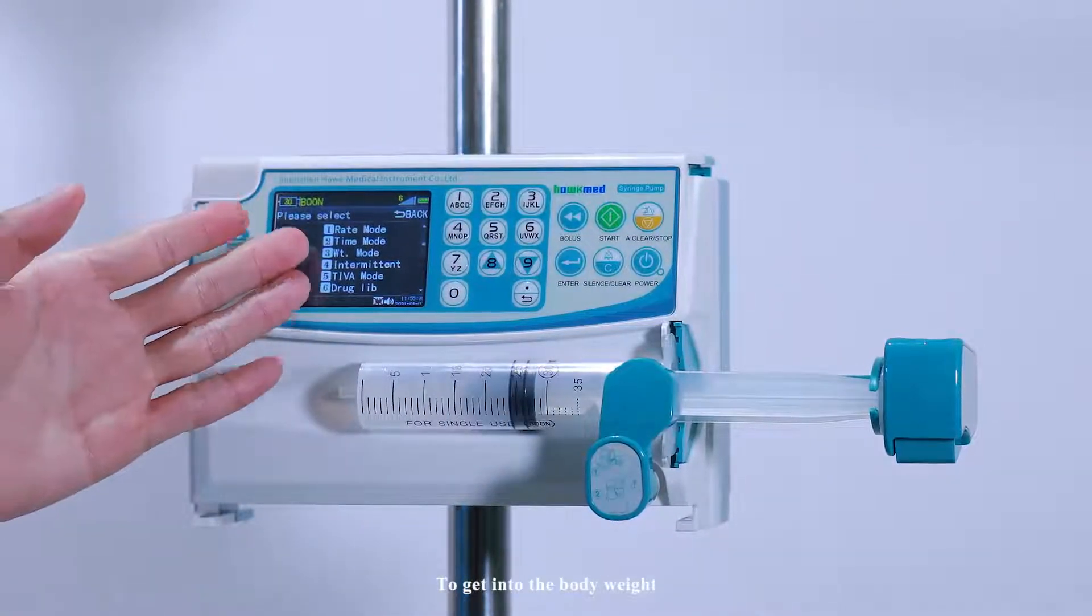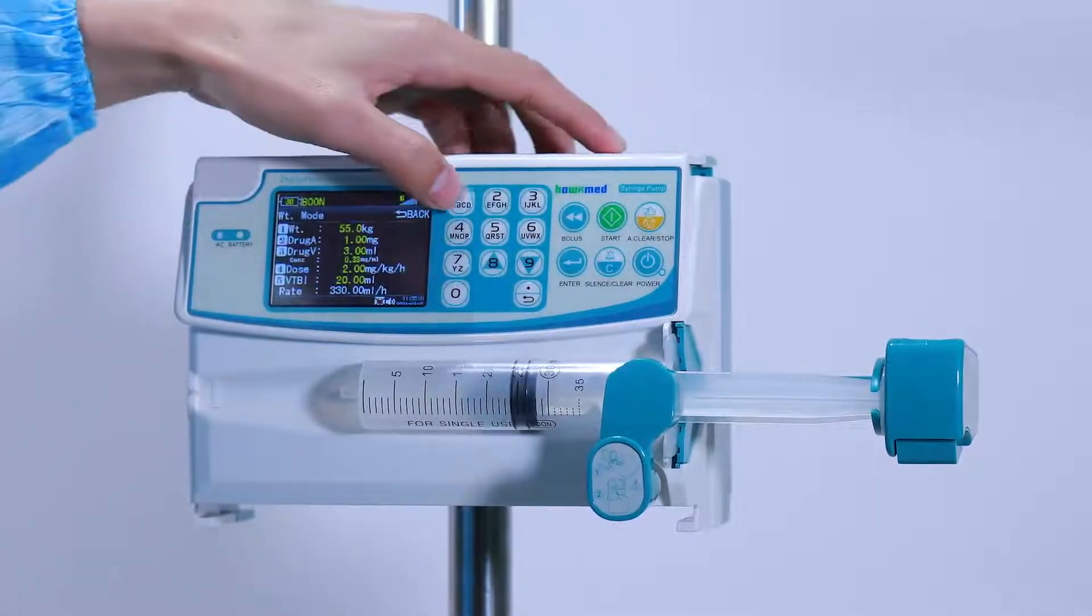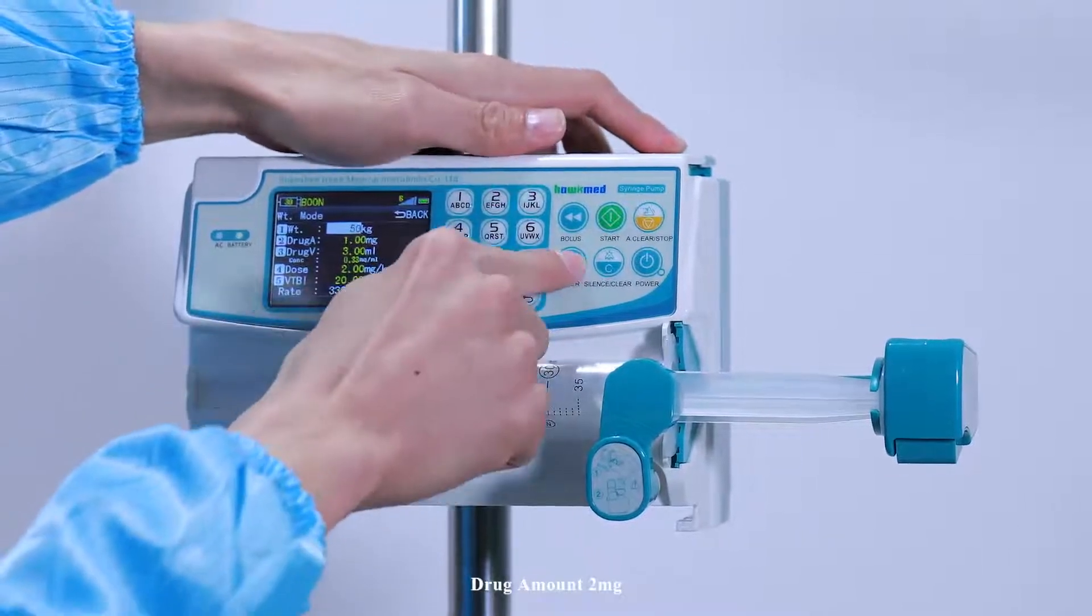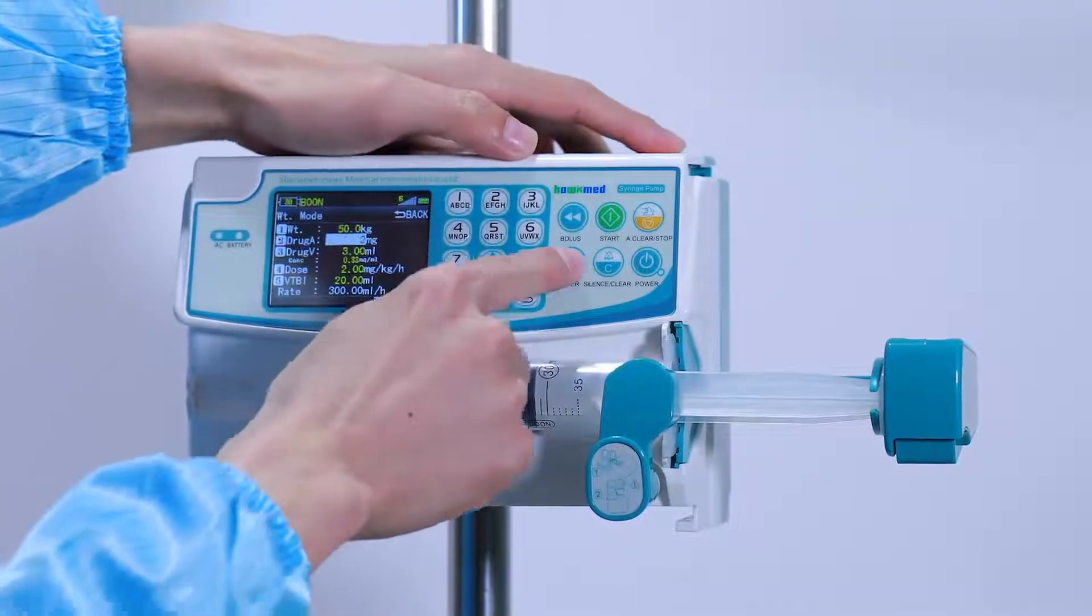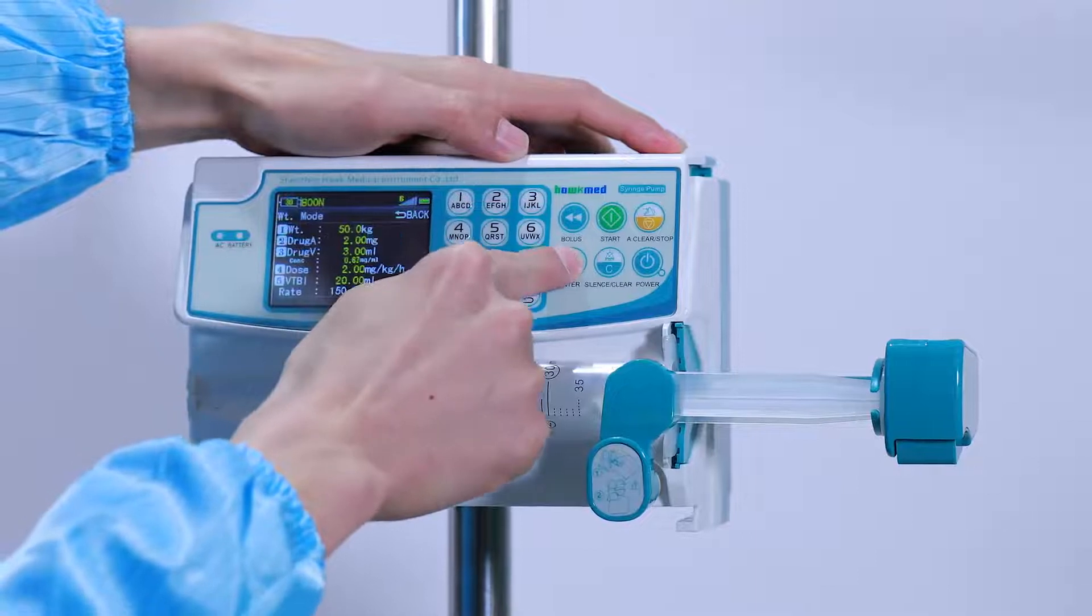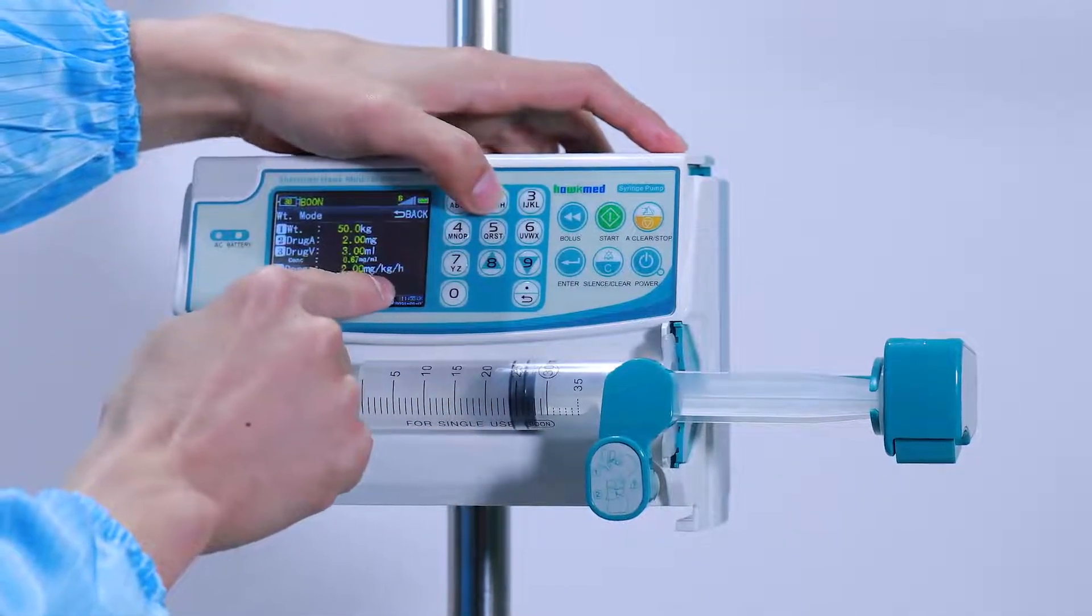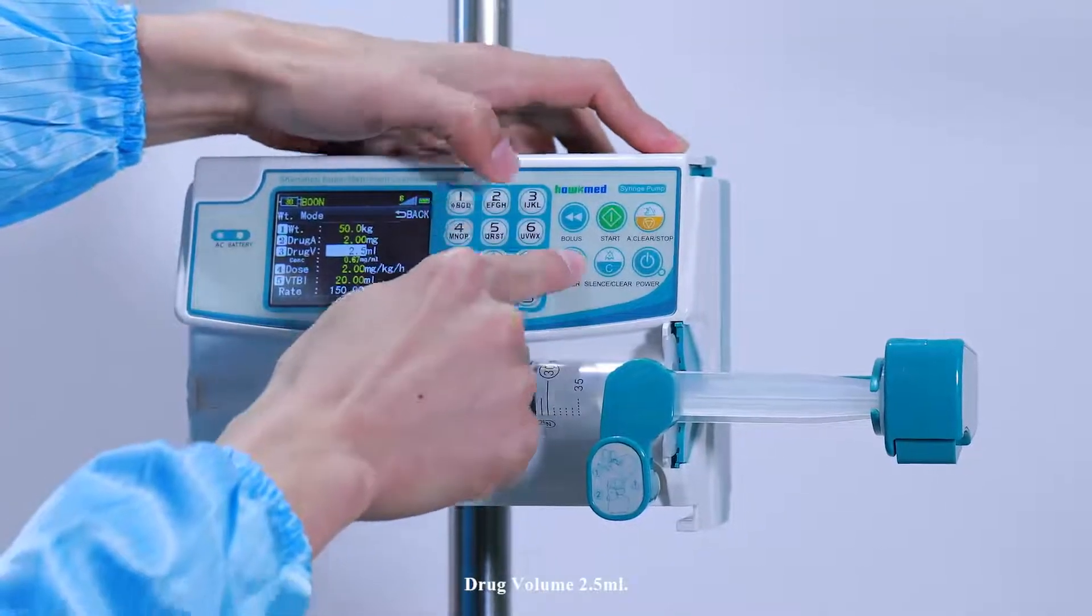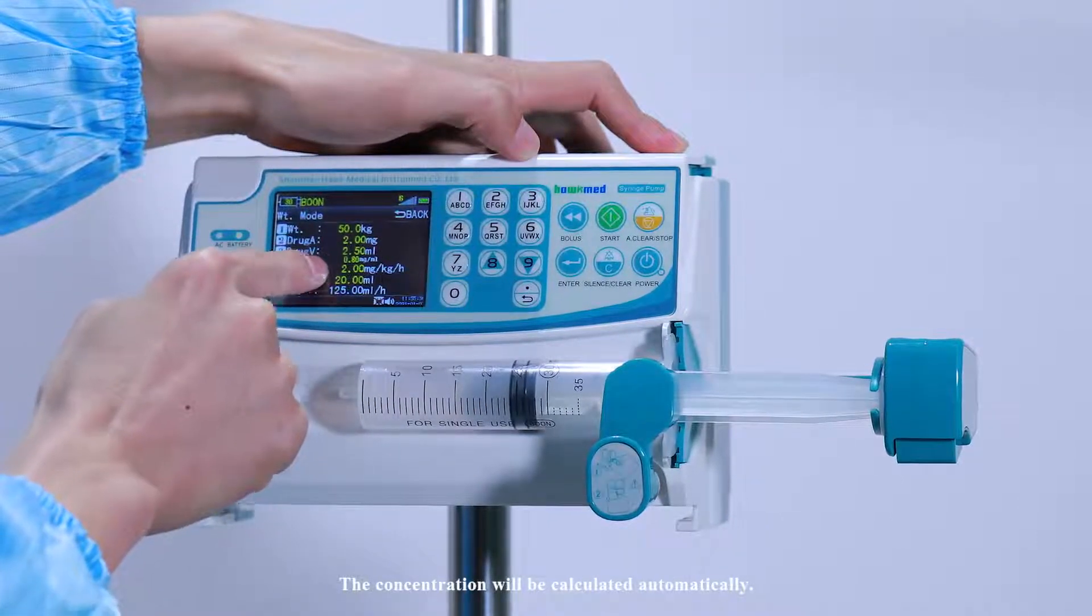To get into body weight mode, press 3. Input body weight like 50, drug amount 2mg, drug volume 2.5ml. The concentration will be calculated automatically.